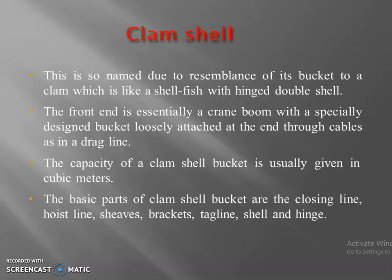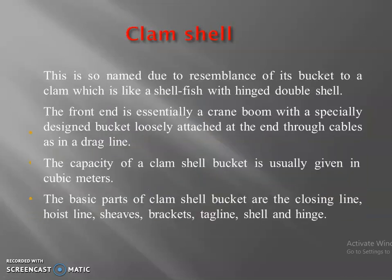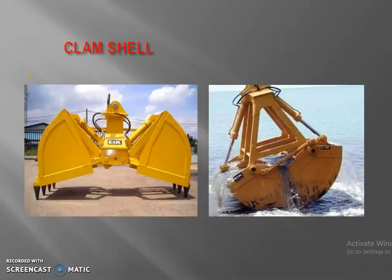And coming to the clamshell. Clamshell resembles like a shellfish. When we want to carry some material, we join both hands together and take out the sand or water or whatever loose materials we need — these are the two hands. It will join the two hands and carry away whatever material it wants to lift. So this is called the clamshell. It is like a bucket. It can hoist, travel some distance, and drop the material at a particular location. We can use this for loose materials and for cofferdams, well foundations, etc.